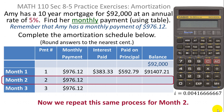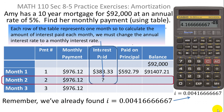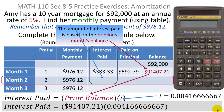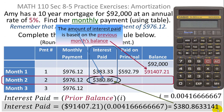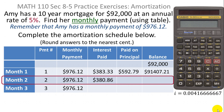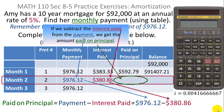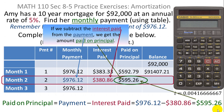Now we proceed to month two using the same process. The interest paid is the prior month's balance of $91,407.21 multiplied by the interest rate per period of 0.0041667. That multiplication gives 380.8633, which rounds to $380.86. The amount paid on principal is the monthly payment minus the interest paid: $976.12 minus $380.86 equals $595.26.